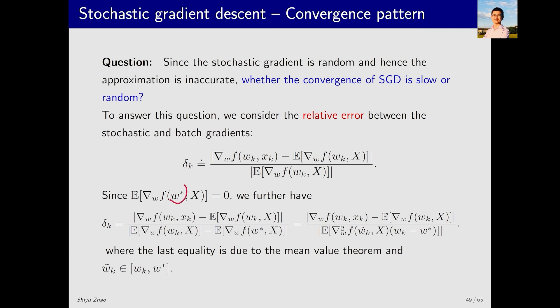First note that w* is the optimal solution, so the expectation of its gradient is zero. Since it is zero, adding it to this equation does not affect anything. We add it to the denominator, and then the denominator becomes this term minus this term. Then it can be transformed into this equation. How is this equation obtained? It used the mean value theorem.